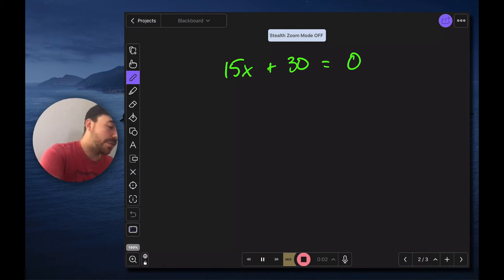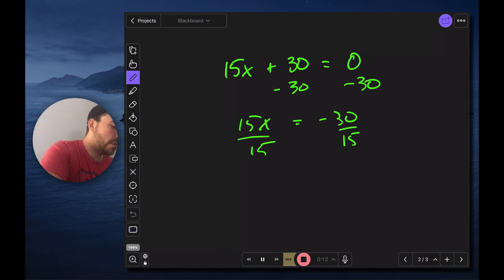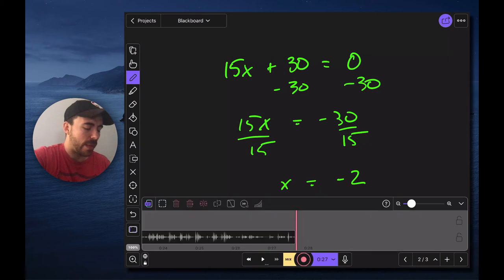All right for my second problem I'm going to do the same thing. I'm going to subtract 30 from both sides. So I have 15x equals negative 30 and I'll divide 15 from both sides. So I have x equals negative 2. And again you can pause or stop your recording. If you're done recording altogether you can just stop. If you're planning on continuing maybe you're collecting your thoughts before you go on you can pause. I will stop the recording because I'm done there.